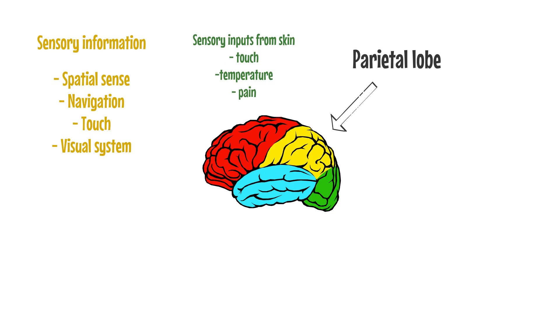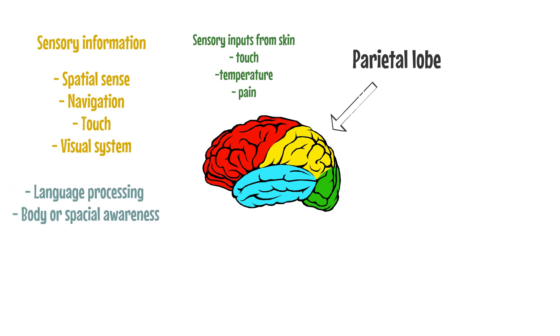The major sensory inputs from the skin — touch, temperature, and pain receptors — relay through the thalamus to the parietal lobe. Several areas of the parietal lobe are important in language processing.